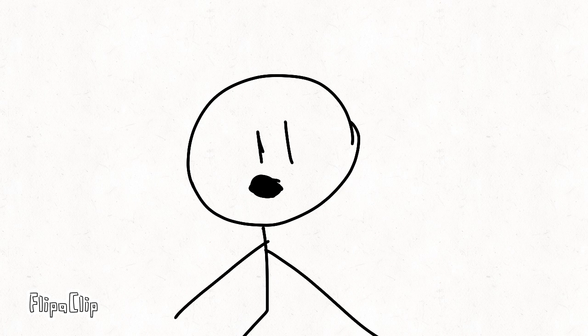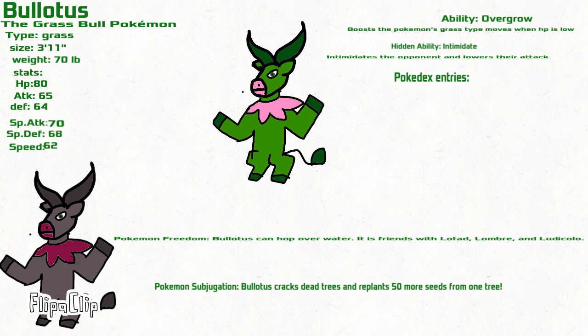If you pick the grass starter, Calflora, it will evolve into Bull Lotus, the grass bull Pokemon, a grass type.